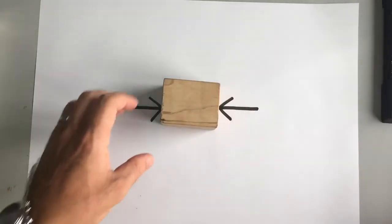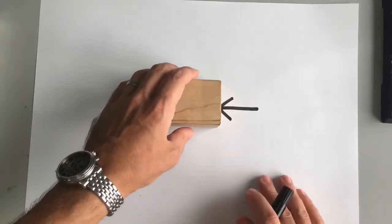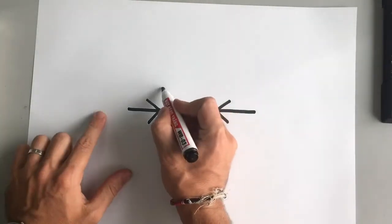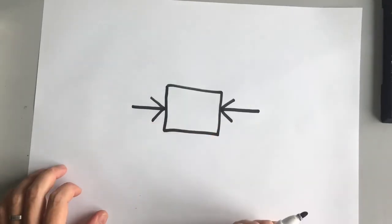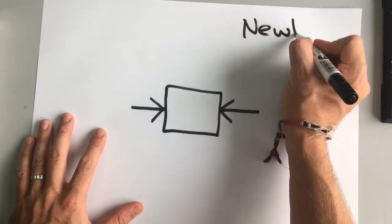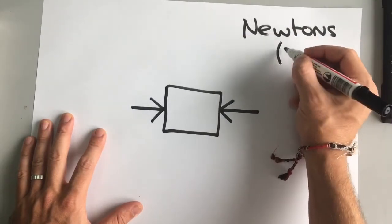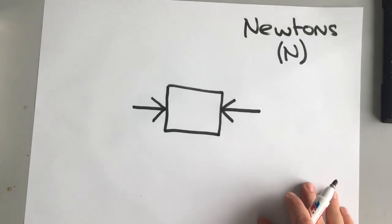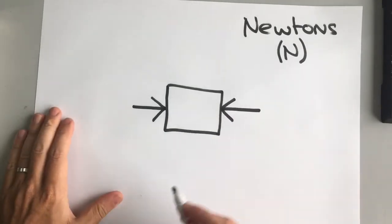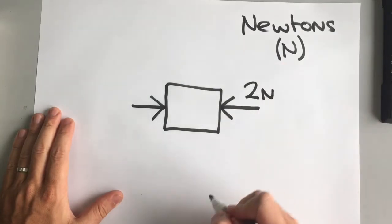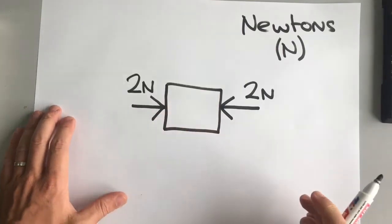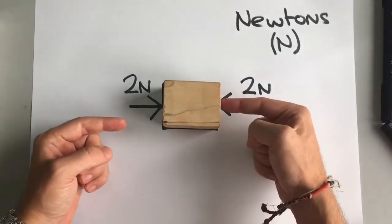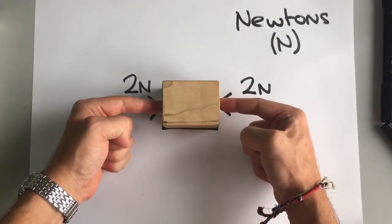We can get more scientific by giving numbers to these forces. If I take the block away and just illustrate it with a square, I can see there are two forces on this block. Force is measured in newtons, and the unit we use is a capital N. So I'm going to say the force from my finger here was two newtons, and this other force here was two newtons as well. With two newtons pushing that way and two newtons pushing that way, the block doesn't move.